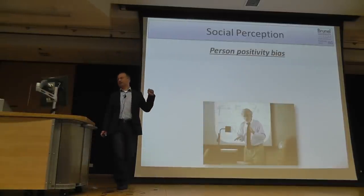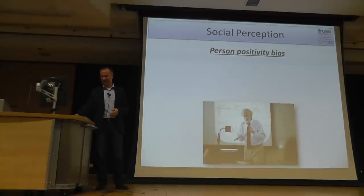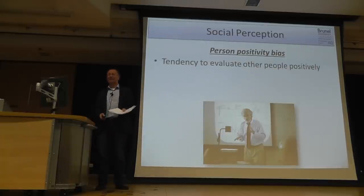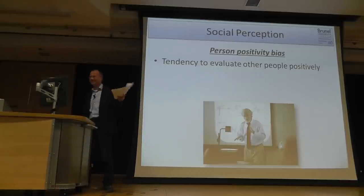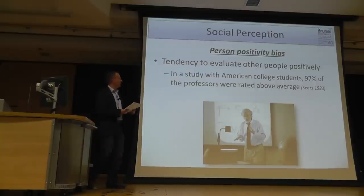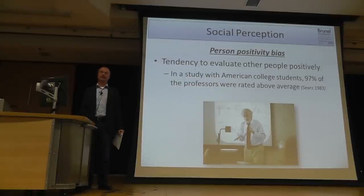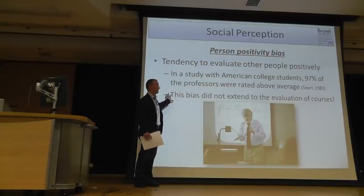Somewhat similar to that is the person positivity bias: in general we have a tendency to evaluate other people positively. In a study with American college students, 97% of professors were rated as being above average, which logically doesn't make sense — it should be only 50%. Interestingly, this tendency really only refers to people and persons; it does not extend to the evaluation of courses.